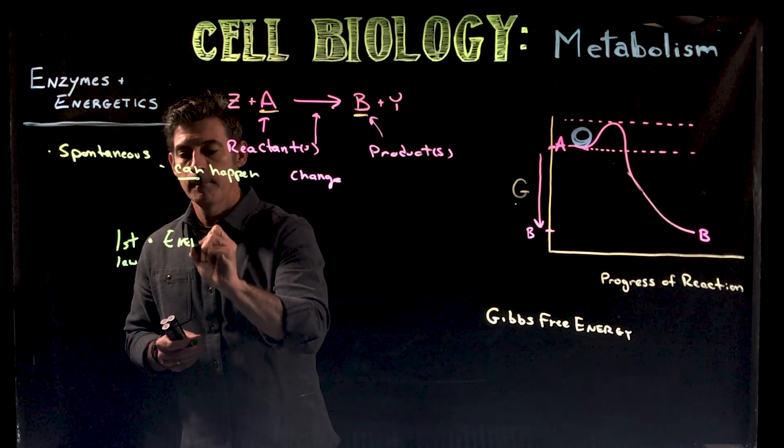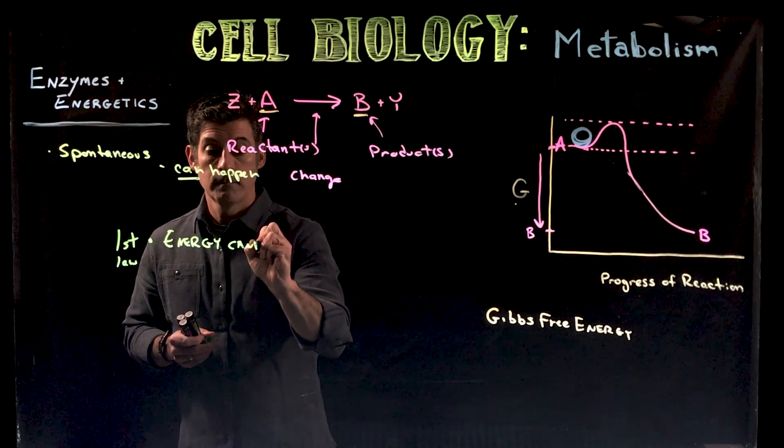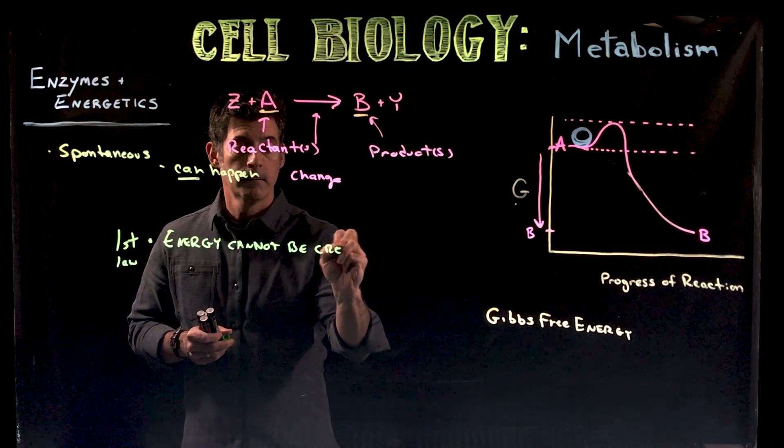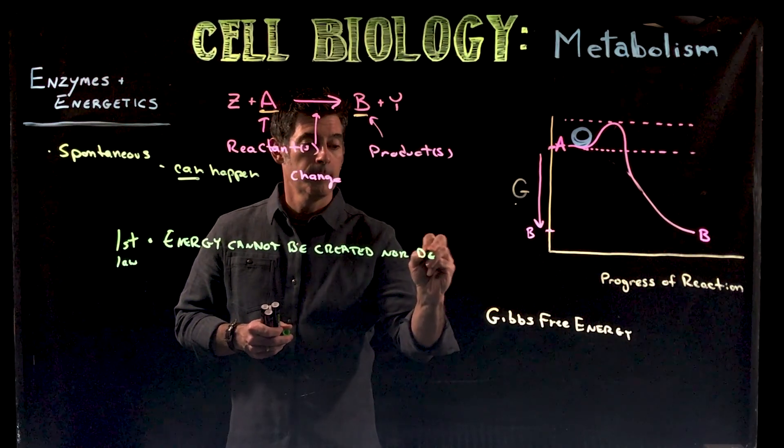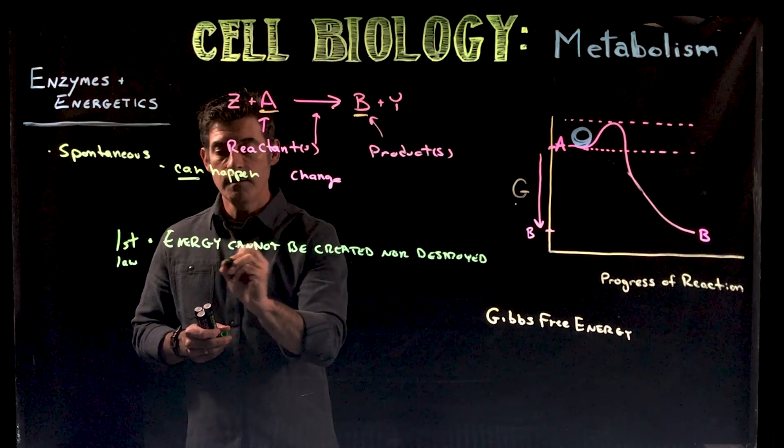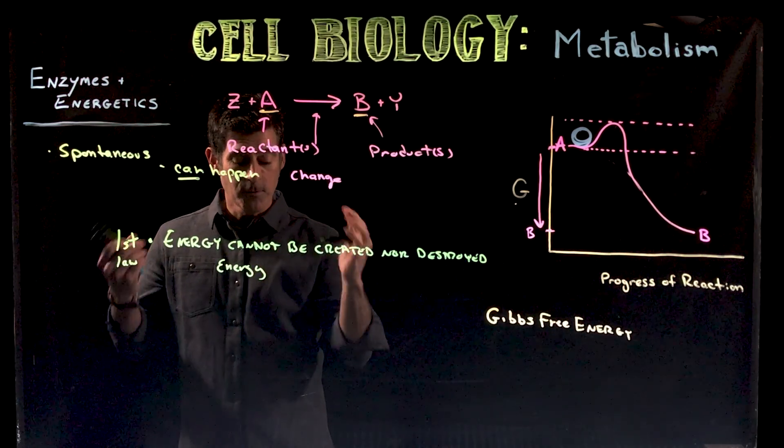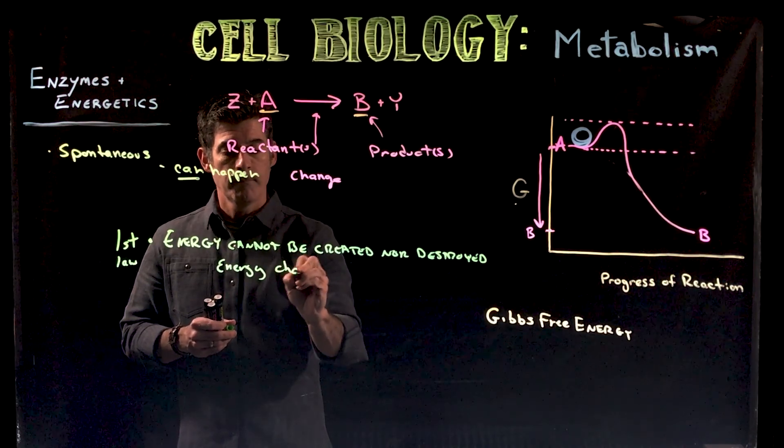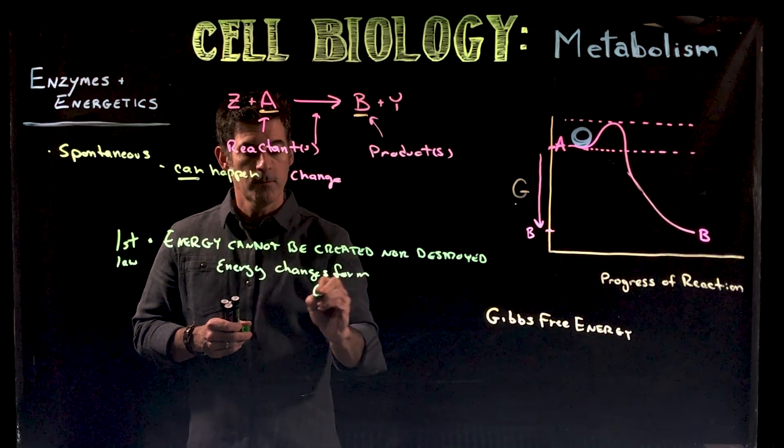This happens with chemical reactions as well. Certain things will prevent those reactions from progressing forward. Now reactions that have high energy to start with and low energy at the end - something has to happen to that energy. We have to realize: energy cannot be created nor can it be destroyed. So energy, the most important thing here for our discussion of cells and energetics, changes form. It's transformed.